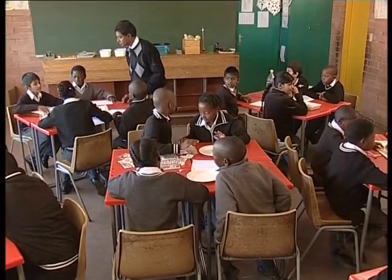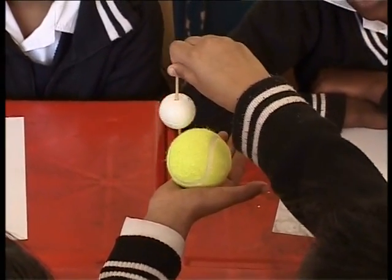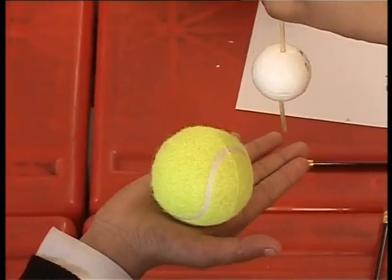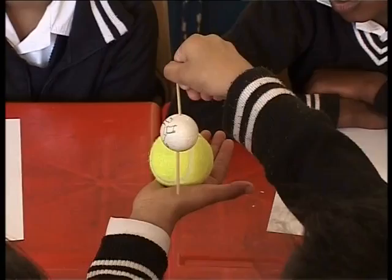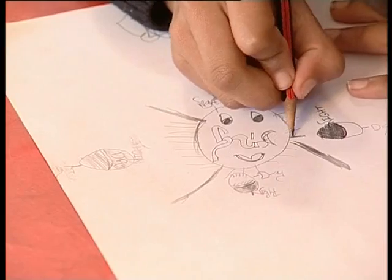Different groups will engage in different tasks. The viewer should be aware that we are illustrating a number of different learning activities suitable for different topics. We are not suggesting we are representing a natural science classroom at any one time — rather, a slice of several different classrooms at several different times. The teacher must facilitate the groups and check that all learners are participating. This group is using a tennis ball and a smaller ball to represent the sun and the earth, and will investigate the causes of day and night and the seasons.